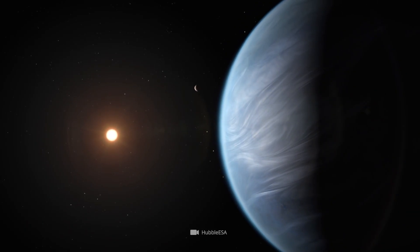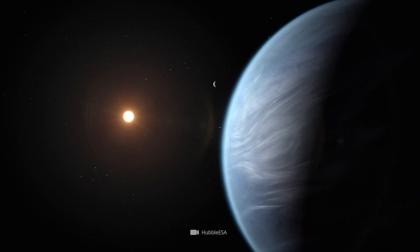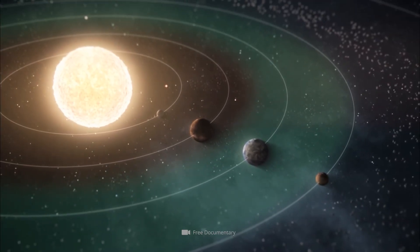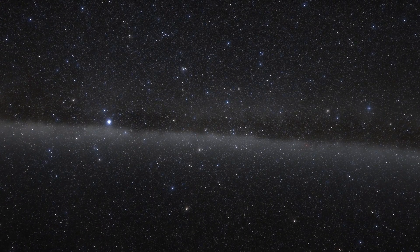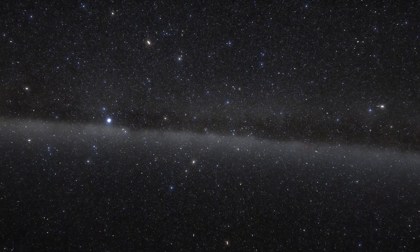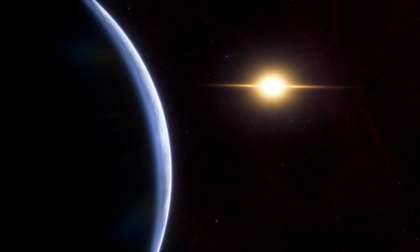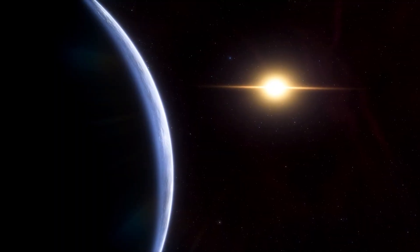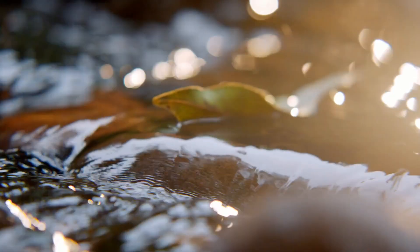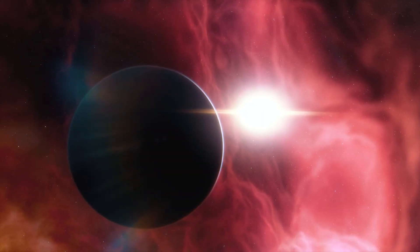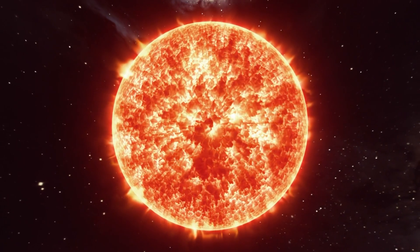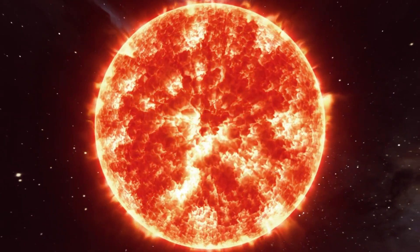Despite the short distance between K2-18b and its red dwarf, the exoplanet is located within the habitable zone of its native system. As a reminder, in the world of astronomers, the habitable zone is the range of distances a planet must be from its central star so that water on the celestial body can exist in a permanently liquid form. This is the case here because the red dwarf is clearly smaller than our sun.